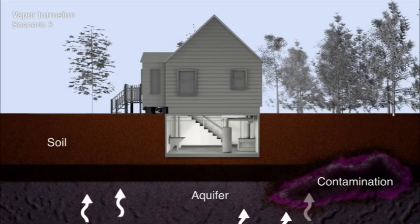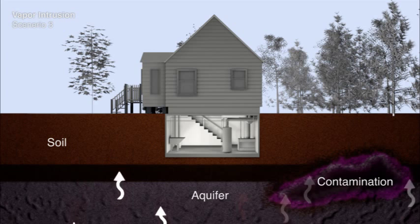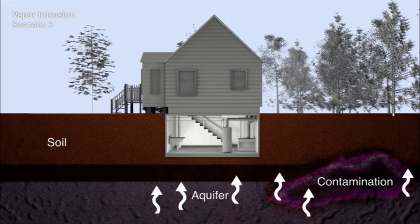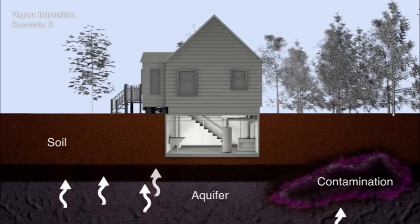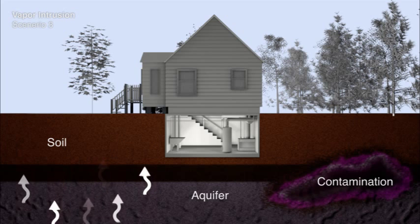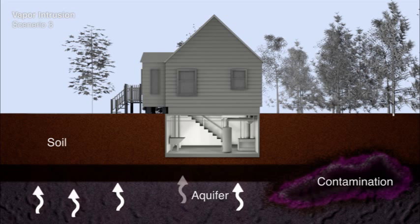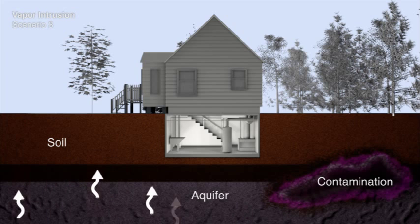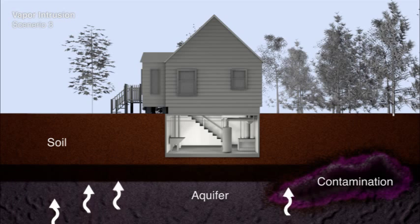Lastly, just because there may be contaminant vapors underground doesn't guarantee that they will enter nearby buildings. Sometimes there is no vapor intrusion. Vapors still migrate but may eventually dissipate to the atmosphere, or they simply are too deep to come into contact with a building foundation.